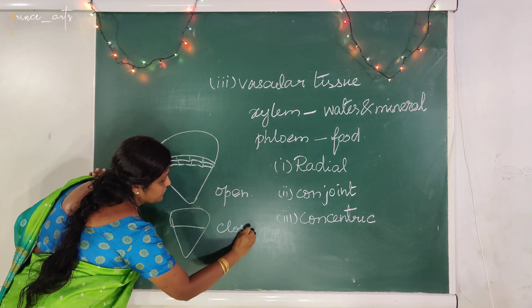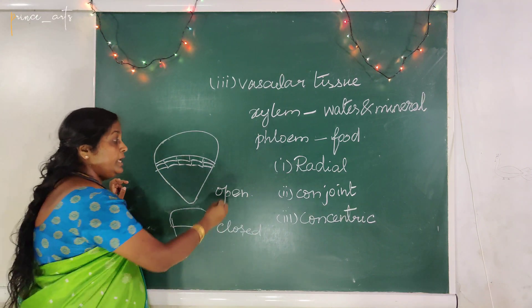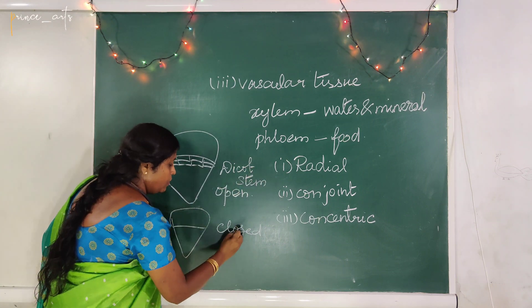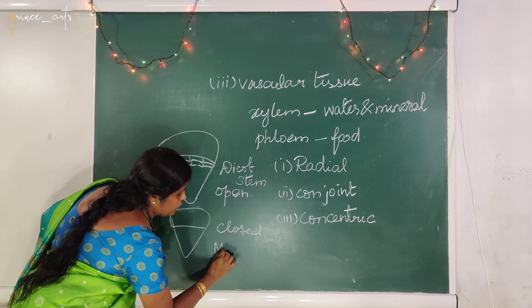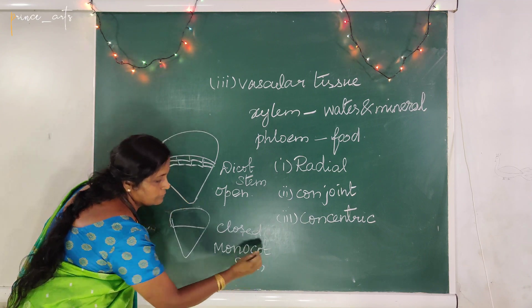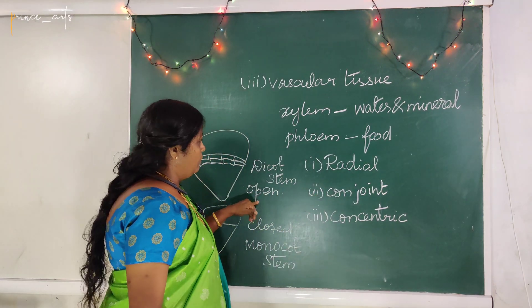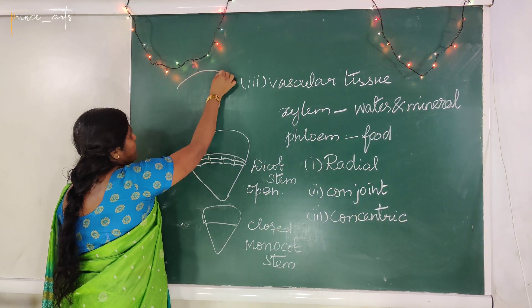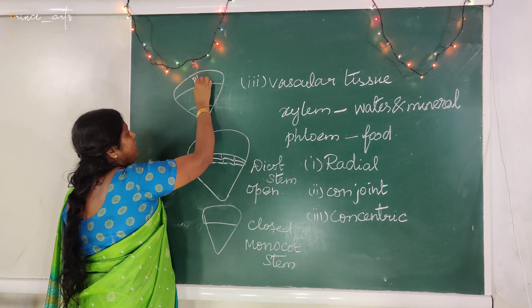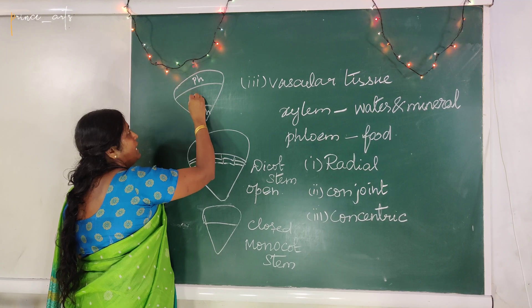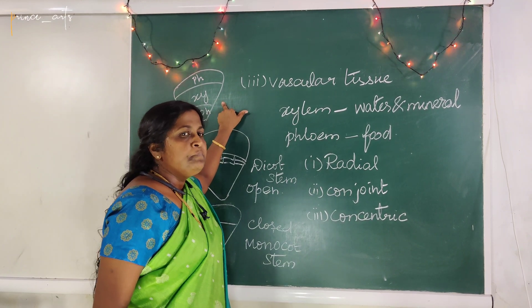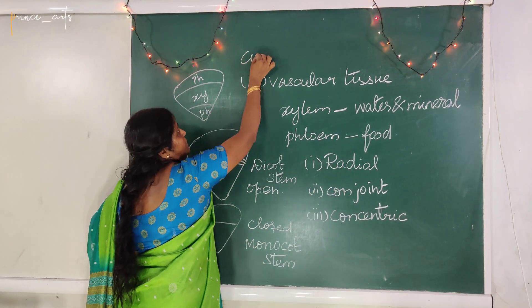The open vascular bundle can be seen in dicot stem, whereas the closed bundle can be seen in monocot stem. This is the collateral bundle. Another one is the bi-collateral bundle — if two phloem strips are present, one on each side, with xylem in between, it is called a bi-collateral bundle. An example is Cucurbitaceae (pepo family).